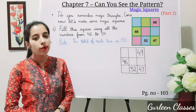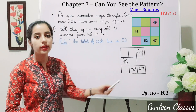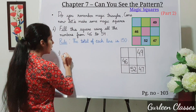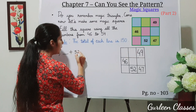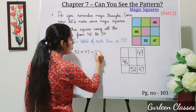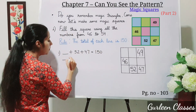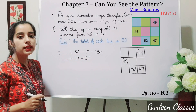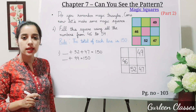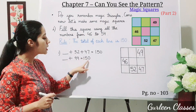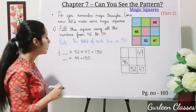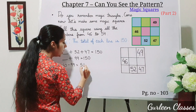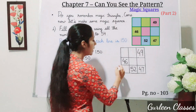We will start with the third row. The numbers given are 52 and 47. So: dash plus 52 plus 47 equals 150. That gives us 99, so 150 minus 99 equals 51. We write 51 in the third row.